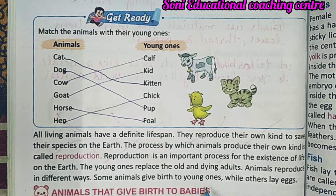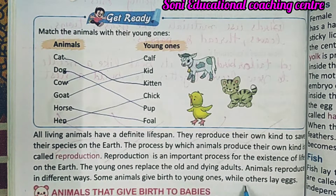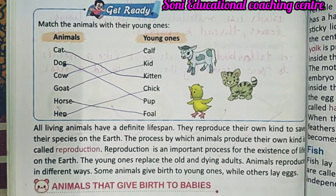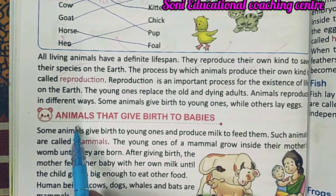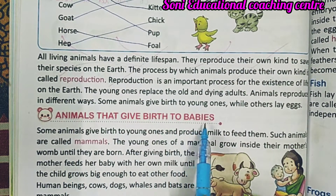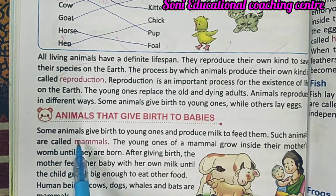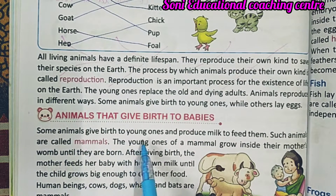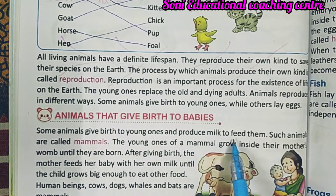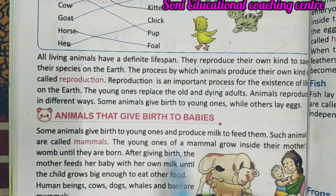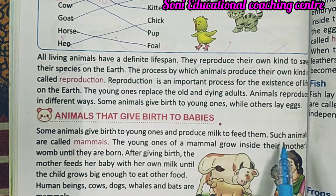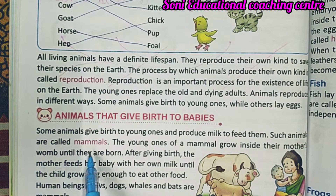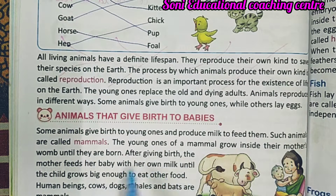Some animals give birth to young ones, while others lay eggs. कुछ जानवर अपने बच्चों को जन्म देते हैं, जबकि कुछ जानवर अंडे देते हैं। Some animals give birth to babies and produce milk to feed them. Such animals are called mammals — ऐसे जानवरों को स्तनधारी बोला जाता है।